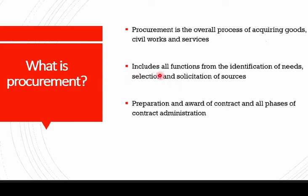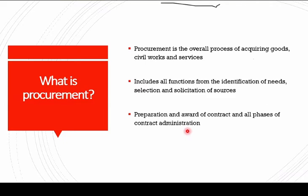We have to select what we are procuring — for us, our concern is drugs, and we saw how drugs are selected. We also have to solicit for the sources: where and from whom are we going to procure? Procurement also covers the preparation and award of the contract, and encompasses the phases of contract administration. The contract award is the final step in the procurement process, but we also have to monitor and manage the contract.